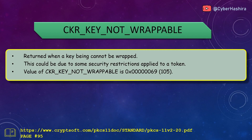CKR_KEY_NOT_WRAPPABLE is returned when a token is unable to wrap a certain type of key due to security restrictions. For example, some hardware token vendors prevent a private key from leaving the token by disabling wrapping functionality. Its value is 69 and is on page 95.